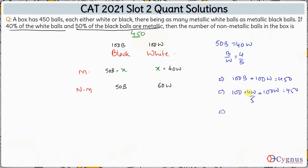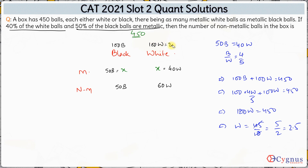Simplifying: 100/5 = 20, and 20 × 4 = 80, so 80 + 100 = 180. We have 180W = 450, which gives W = 450/180 = 2.5. So the number of white balls is 100 × 2.5 = 250. Hence the number of black balls is 450 − 250 = 200.